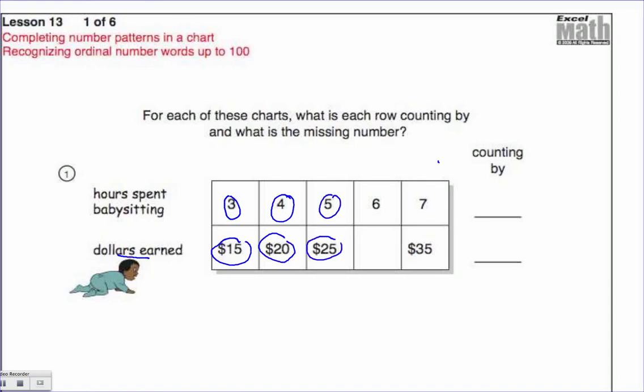Notice the numbers go with these labels on the end. Seven hours babysitting $35. Think about what are these numbers counting by and put that number right here, and then what are these numbers counting by and put that number right here and fill in the missing number. Pause the video, turn it back on when you're ready for the solution.